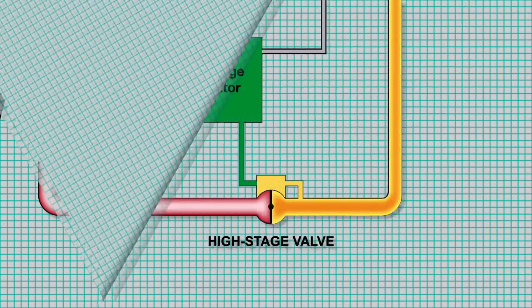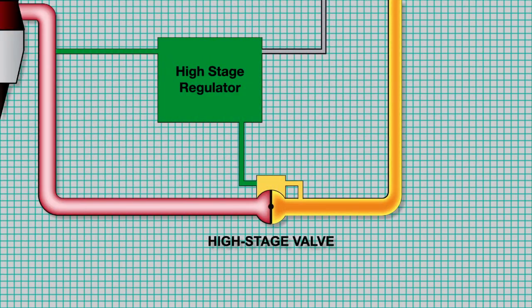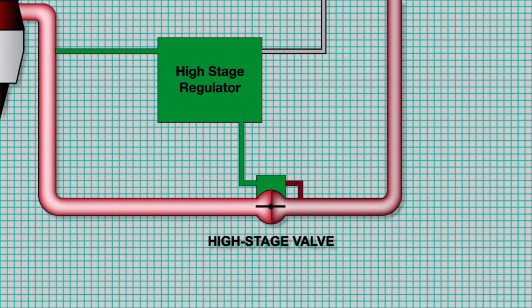If the 9th stage supply pressure goes to more than 110 PSI, the overpressure function of the HSR cuts off pressure to prevent damage. Note that during engine start, reverse flow can occur. When this happens, pressure from the downstream sense line causes the HSR to remove control pressure from the HSV, which in turn causes the HSV to close, preventing reverse flow to the 9th stage.